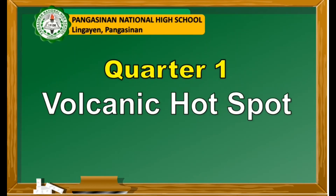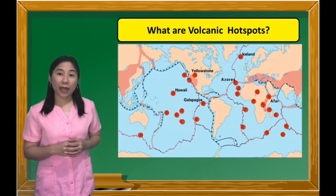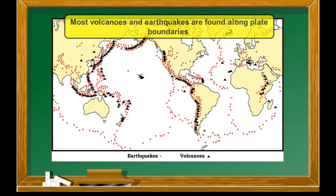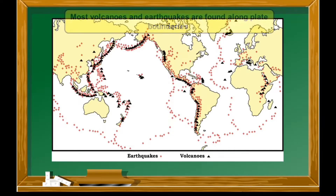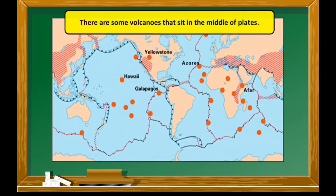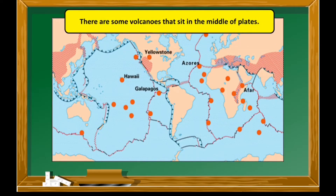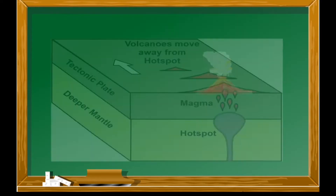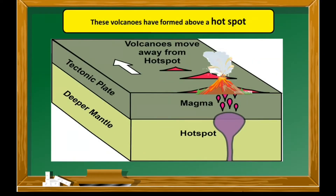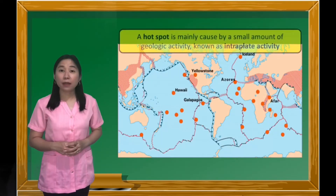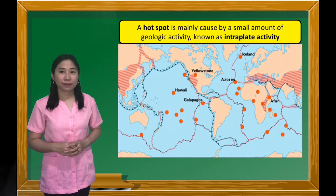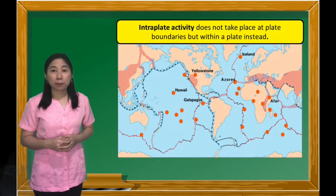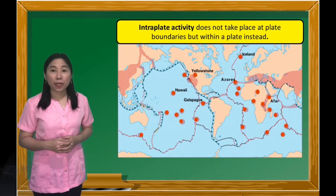Volcanic Hotspot. What are volcanic hotspots? Most volcanoes and earthquakes are found along plate boundaries. There are some volcanoes that sit in the middle of plates. These volcanoes have formed above a hotspot. A hotspot is mainly caused by a small amount of geologic activity known as intraplate activity, which means that tectonic activity does not take place at plate boundaries, but within a plate instead.